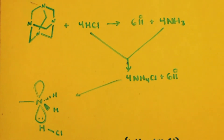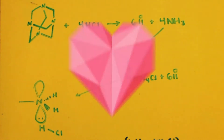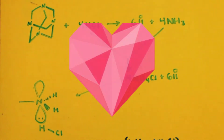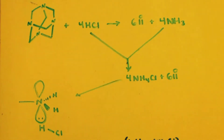This is John Black Breaking Mad. We are here to talk about how to make methylamine from hexamine. I did a video where I tell you how to buy hexamine and get it nice and pure.